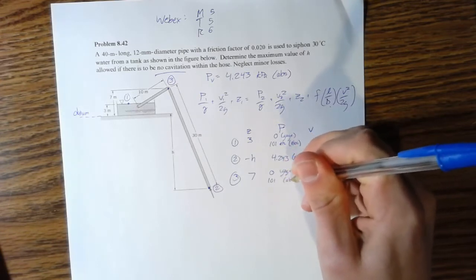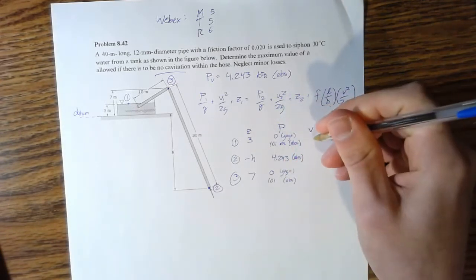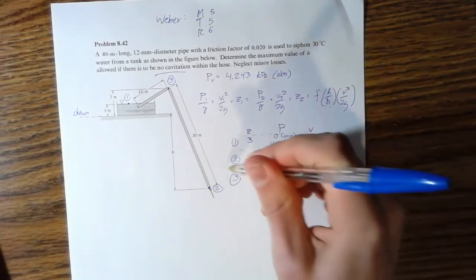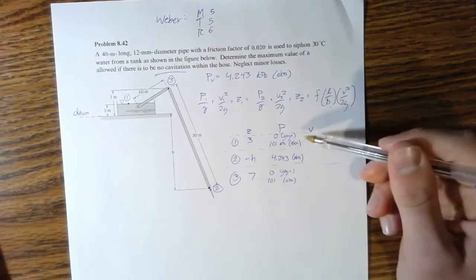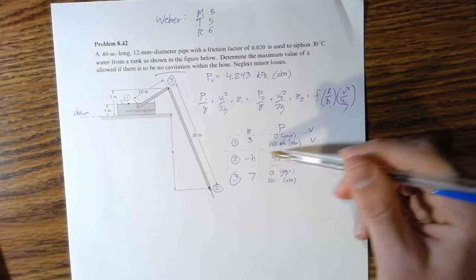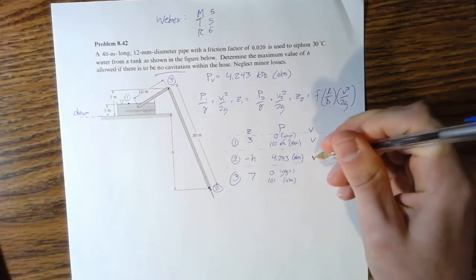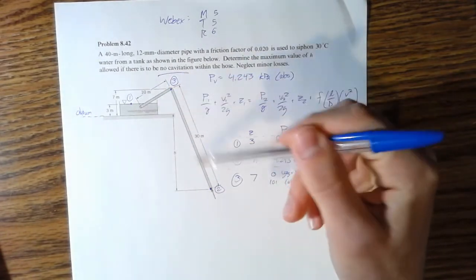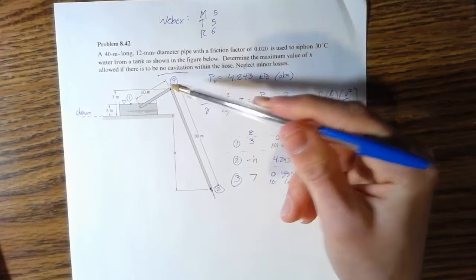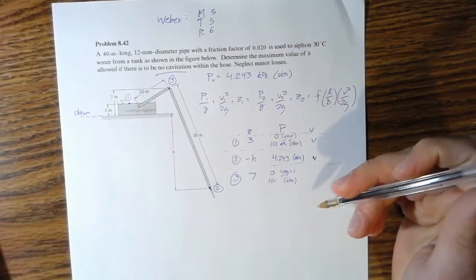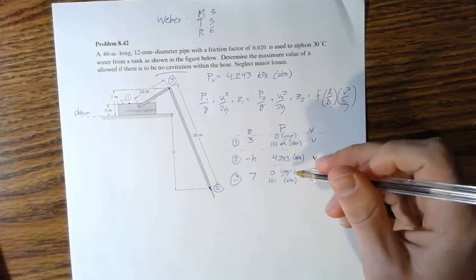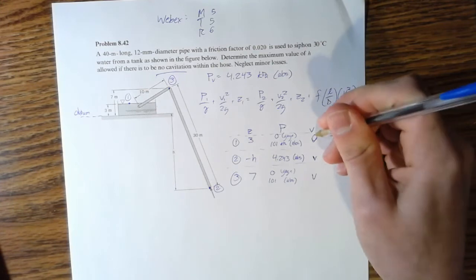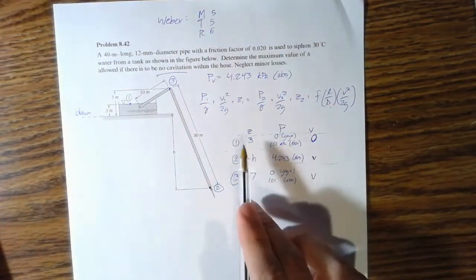Velocity - we don't know what the velocity here is, but we know it's the velocity in the pipe. Velocity at 2 is going to have the same velocity as velocity 1 by continuity equation. Velocity at this point in the pipe is going to have the same velocity at this point in the pipe. Velocity at point 1, that's supposed to be zero because that's our large tank.